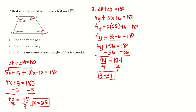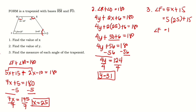Now for question number 3, we're going to find the measure of each angle of the trapezoid. Since we now have the values of x and y, we can obtain the measure of each angle. Let's start by finding the measure of angle F. Angle F measures 5x + 15. Substituting x = 25: 5 times 25 is 125, plus 15. The measure of angle F is 140 degrees.